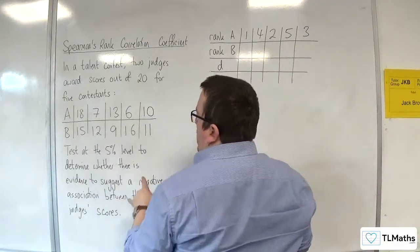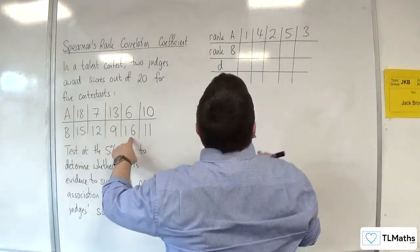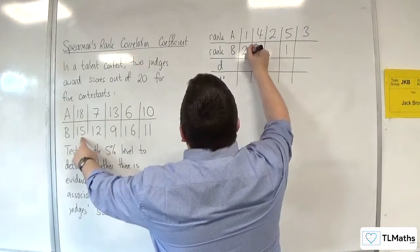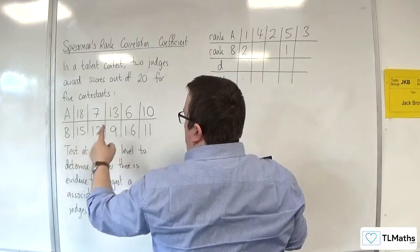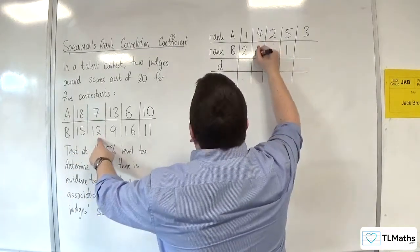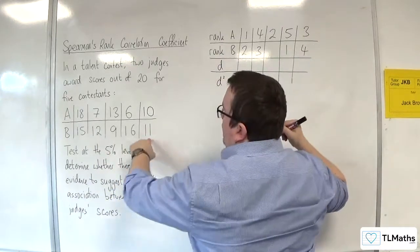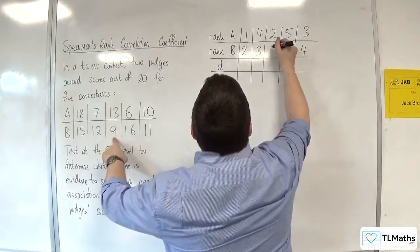Then, for judge B, we've got the 16 as first. We've got the 15 as second. We've got the 12 as third. We've got the 11 as fourth, and the 9 as fifth.